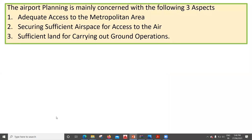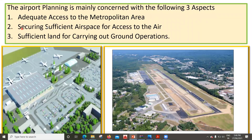Airport planning is mainly concerned with three aspects: first, adequate access to the metropolitan area; second, securing sufficient airspace for access to the air; and third, sufficient land for carrying out ground operations. We need to consider the surrounding area, what construction exists, and whether in future we have suitable space for extension. Ground operations include takeoff, landing, cargo activities, and whatever other activities are required — enough space should be there.